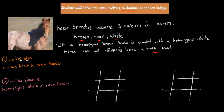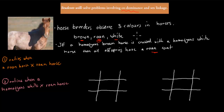The first question asks for ratios when a roan horse is crossed with a roan horse. From the information, we know that crossing homozygous brown with homozygous white gives a heterozygous roan horse, so the roan must be a combination of brown and white alleles. We can write that as capital B and capital W together — that is roan.